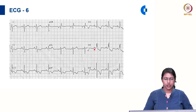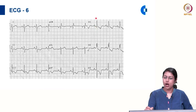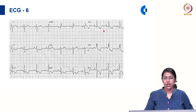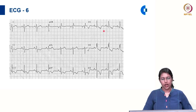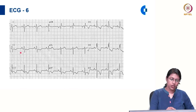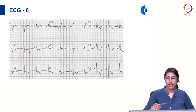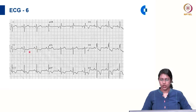In ECG 6, in V1 we are seeing a QR pattern — a small Q and tall R — and in V2 and V3 we can see a right bundle branch block pattern. This may be type B right ventricular hypertrophy. Additionally, there is also a finding suggestive of right atrial abnormality in this ECG.